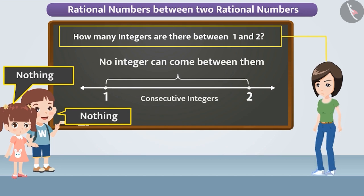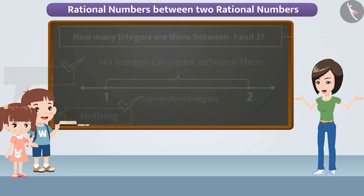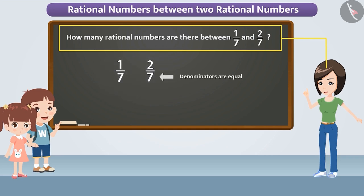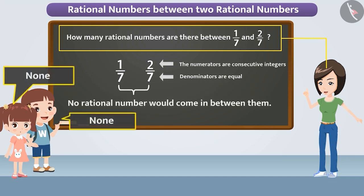To this, Sarita said absolutely right. Then Sarita asked: how many rational numbers are there between one by seven and two by seven? Amit and Nisha saw that the denominators of the two rational numbers are equal and the numerators are consecutive integers, so they thought no rational number would come in between them. As a result, they answered none.